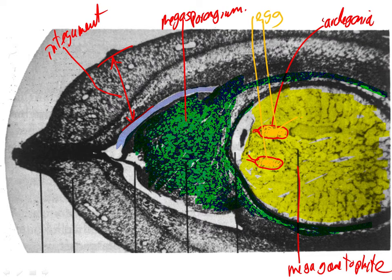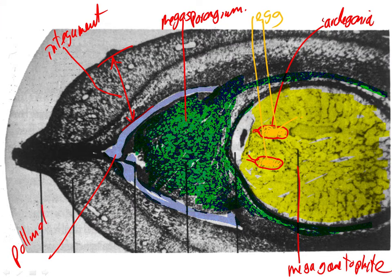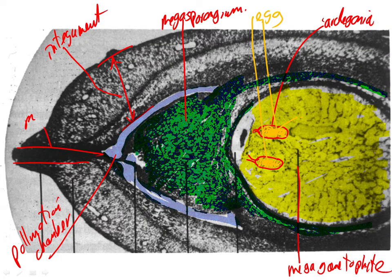Here's the first of those cavities — the pollination chamber, because the pollen grain is going to come to lie there. The pollen grain is going to get drawn inside the ovule and come to lie in that chamber. When it's drawn in, it comes through the micropyle running through the integument. It's a little older here, so it's closed up, but it would be open at the time of pollination when the pollen is going to be drawn through the micropyle.